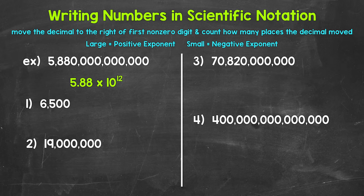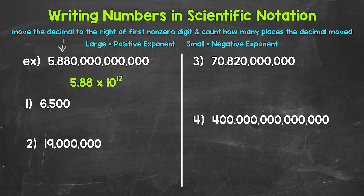Remember, scientific notation is a way for us to write really large numbers or really small numbers in a shorter, more condensed way. This helps make really large and really small numbers more manageable and easier to work with. For example, we have this really large number right here — this number goes to the trillions. This is actually the number of miles light travels in one year. This is what we call a light year — the distance light travels in one year. Light years are used to measure very far distances in space. Now working with numbers like this can be difficult, tedious, and take up a lot of space with all of those digits and zeros. So we use scientific notation to condense them, to write them in a simpler form.